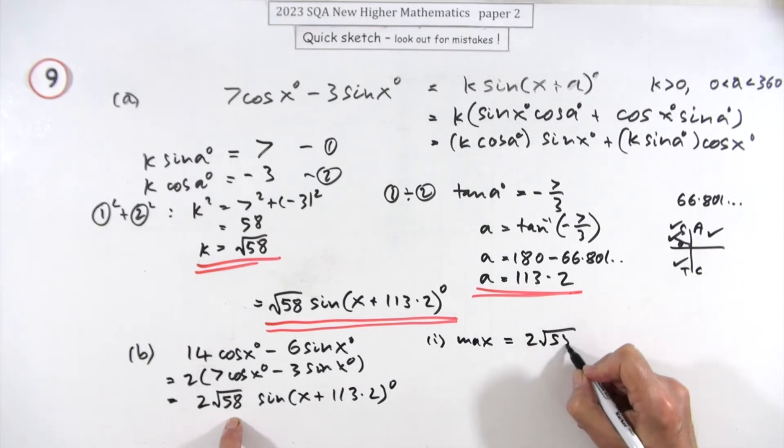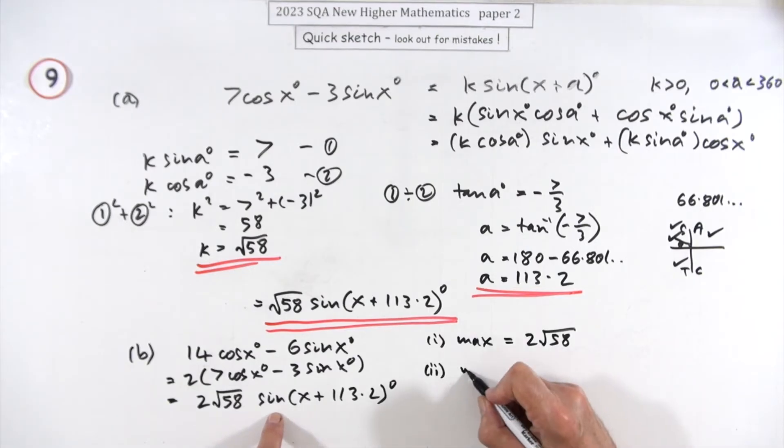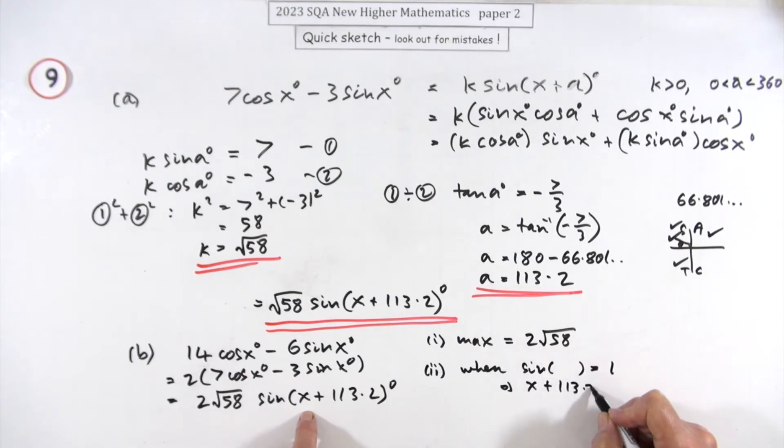Well from that you can get one, the maximum value, so it'll just be this amplitude here, 2 root 58. And two, when it occurs, it'll occur when the sine is at its maximum, so it'll be when the sine of whatever equals 1.